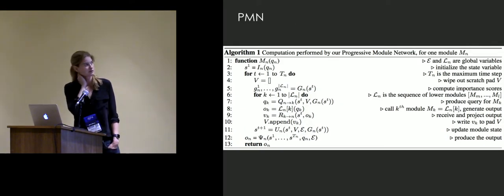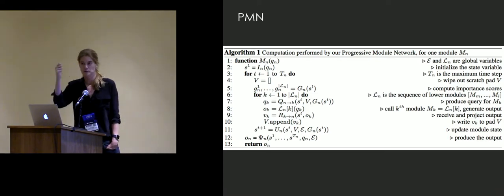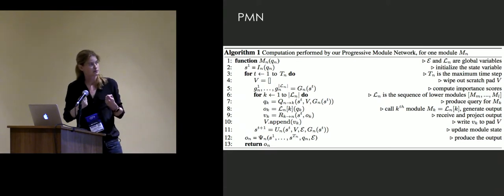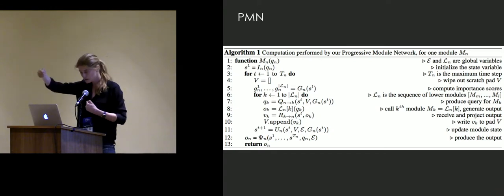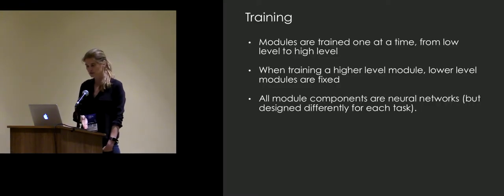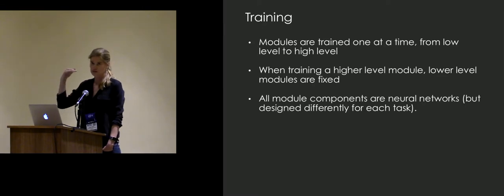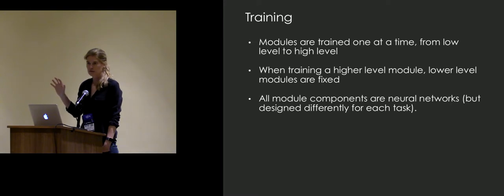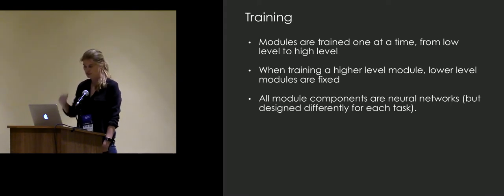Conceptually this is a simple algorithm: you do loops in the current controller, produce a query based on your current state, receive the output, do a soft weighted latent representation, and produce output. We train the modules one at a time from the simplest to more complex — we manually define what's the simplest task and what's level one, level two, and so on. When training the next task, we keep the lower levels fixed, so the new task just reuses them and learns whatever residual it needs.